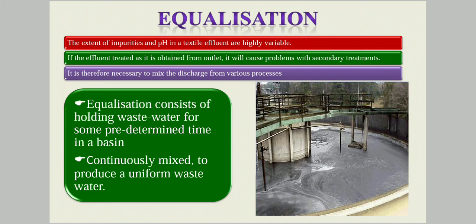Equalization is done to obtain a uniform characteristic liquid. The extent of impurities and pH in a textile effluent is highly variable at each step, and if the effluent is treated as obtained from the outlet, it will cause problems with secondary treatment methods. It is therefore necessary to mix the discharge from various processes in an equalization tank. The equalization consists of holding wastewater for a predetermined time in a basin, continuously mixing various process waters to produce a uniform wastewater.